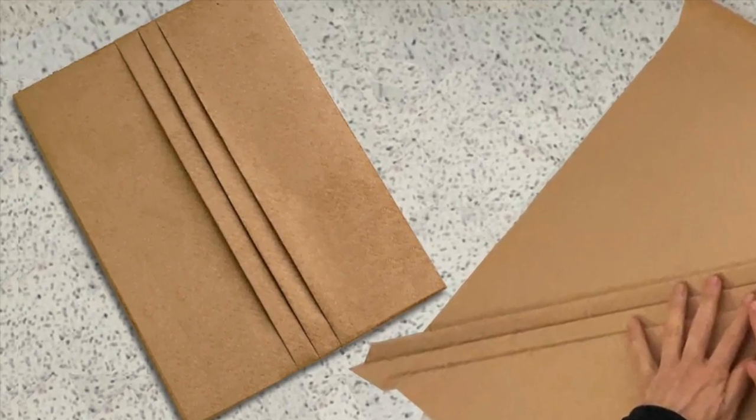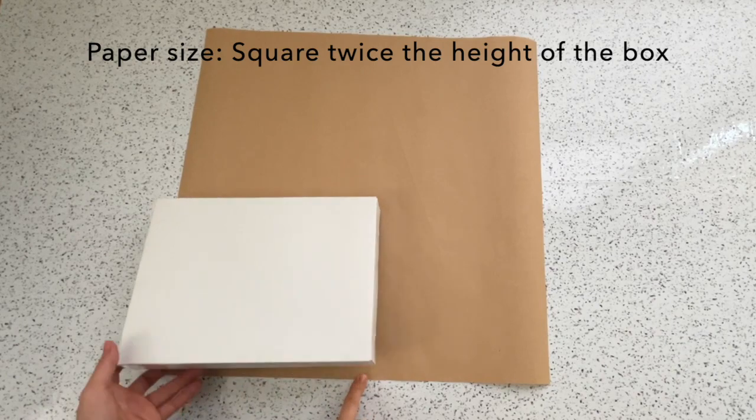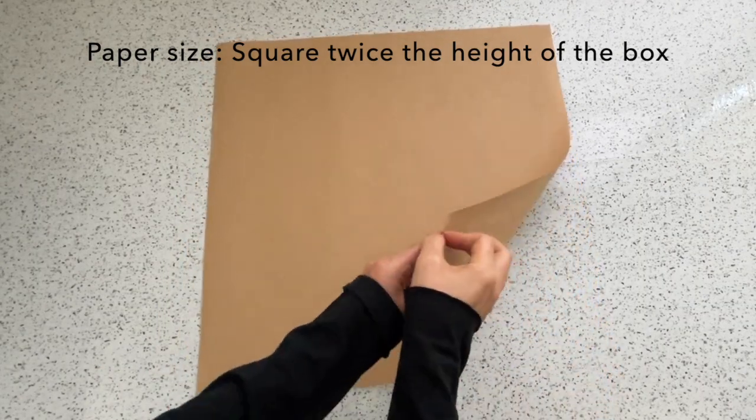I'd like to show you noshi-zuki wrapping in a unique way. Prepare a square piece of paper about twice as long as the height of the box.